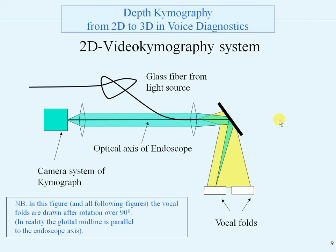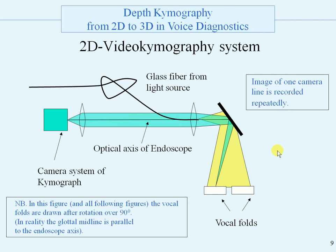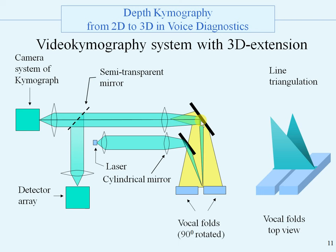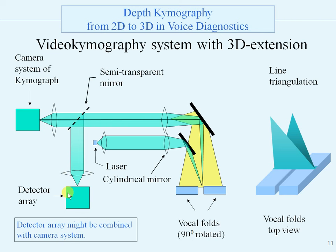The idea of kymography is that one camera line is recorded repeatedly. The 3D kymograph has a 2D system plus a 3D extension, which consists of an extra optical axis with a laser and a cylindrical mirror to produce a line on the vocal folds. We then apply line triangulation — light going in and coming out — with an extra detector that can be combined with the camera system using proper filtering.